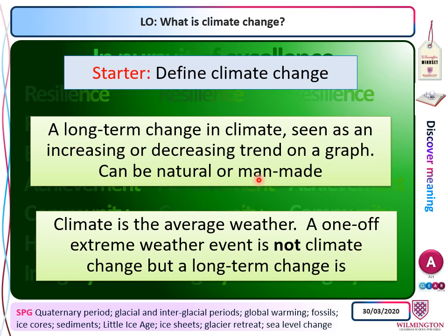The shortest time scale over which you can see climate change is possibly a decade or two decades, but really probably three decades, because climate is the average weather taken over 30 years. For climate to have changed you have to see it over more than three decades. So we're talking at least 30 years for there to be a sense of climate change — but it can be longer: centuries, thousands of years, or even millions of years.